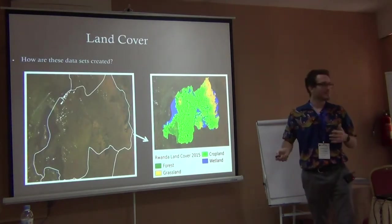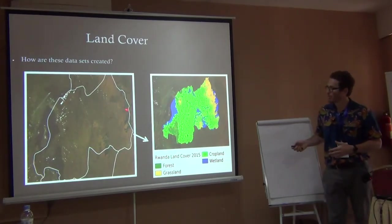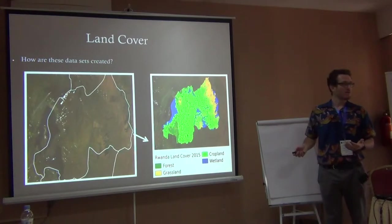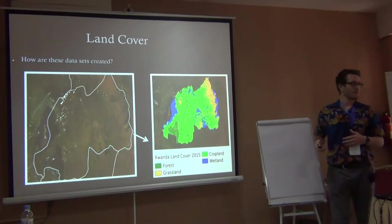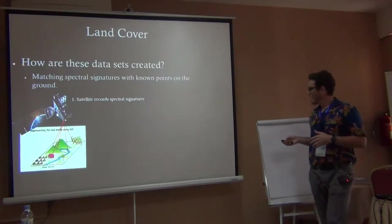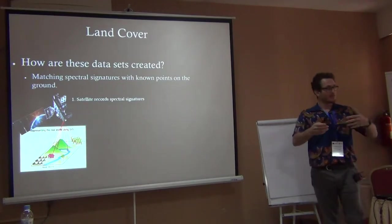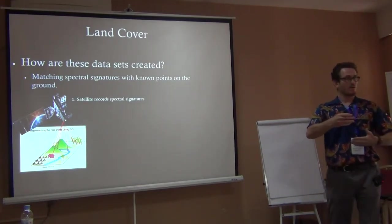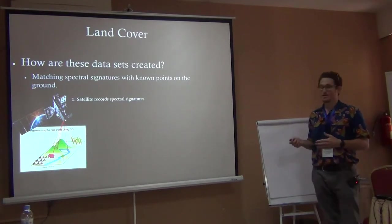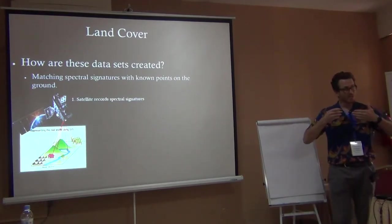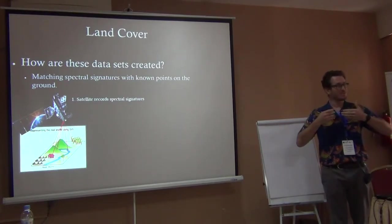So how do we create these data? How do we go from taking an image of the earth to saying this is forest, this is river, this is cropland? The general way is to take a satellite to measure different light or energy frequencies. The satellite measures the reflection of energy from the earth into its sensor.